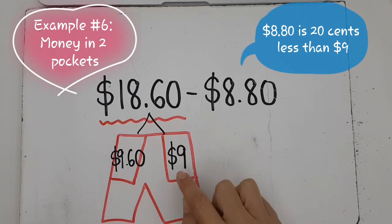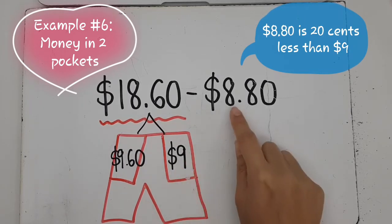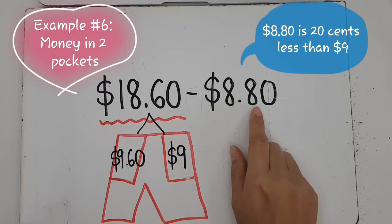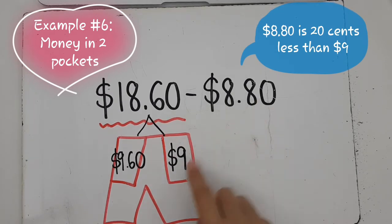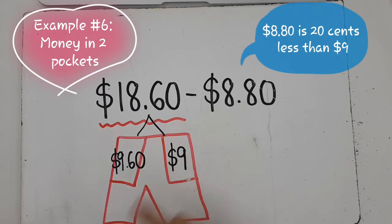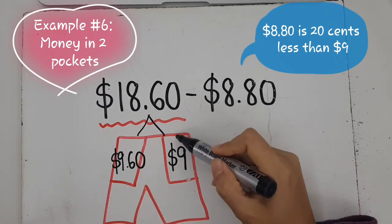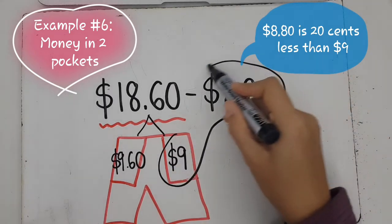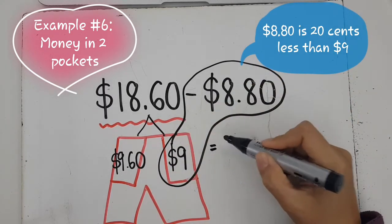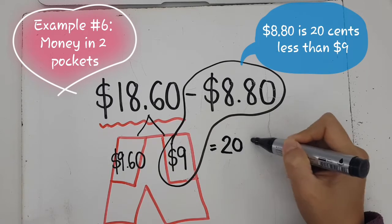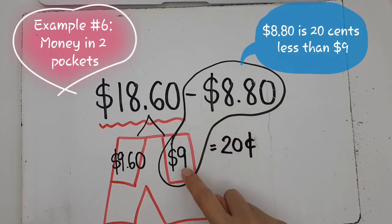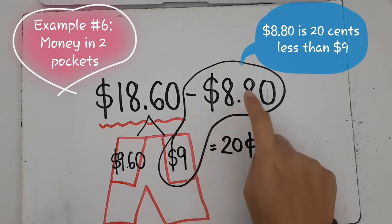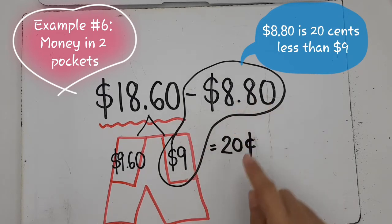Now why do I choose to put $9 in this pocket? It's because it's very near to $8.80. Now if I want to take away $8.80, which pocket should I choose? I am going to choose this one because it's so easy. $9 take away $8.80, that will just give me $0.20. Why? Because you add $0.20 to this, you get $9. If you have $9, you take away $8.80, you get $0.20.